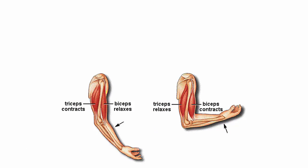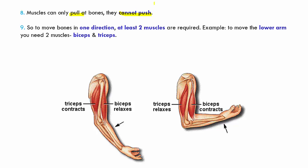Let's see how exactly the movement of muscles works. Muscles can only pull at bones — they cannot push a bone. So only if muscles pull can bones move. To move bones in a single direction, you need at least two muscles.